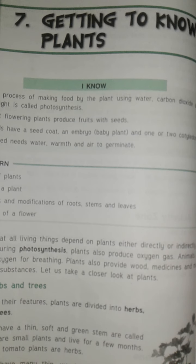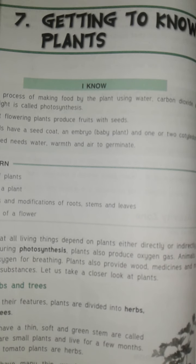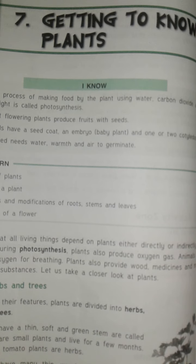The stems of some plants are very thin and long. They are so thin that they cannot stand straight — they need support to grow, so they climb on other trees or other objects. Usually, their stems have small hooks or tendrils which bind around the supports as they climb. They are known as climbers. For example: money plant, gourd plant, ridge gourd plant, etc.